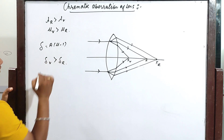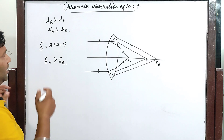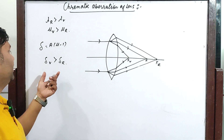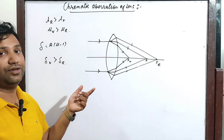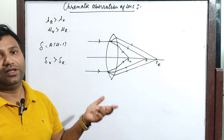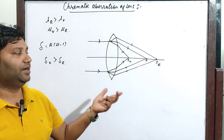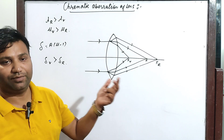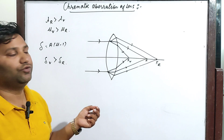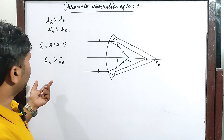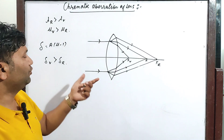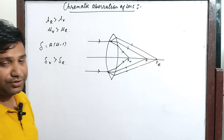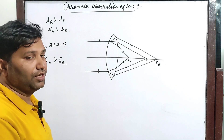This may also be asked in short questions or MCQs: which color has maximum deviation? Among the options given, the answer is violet color.